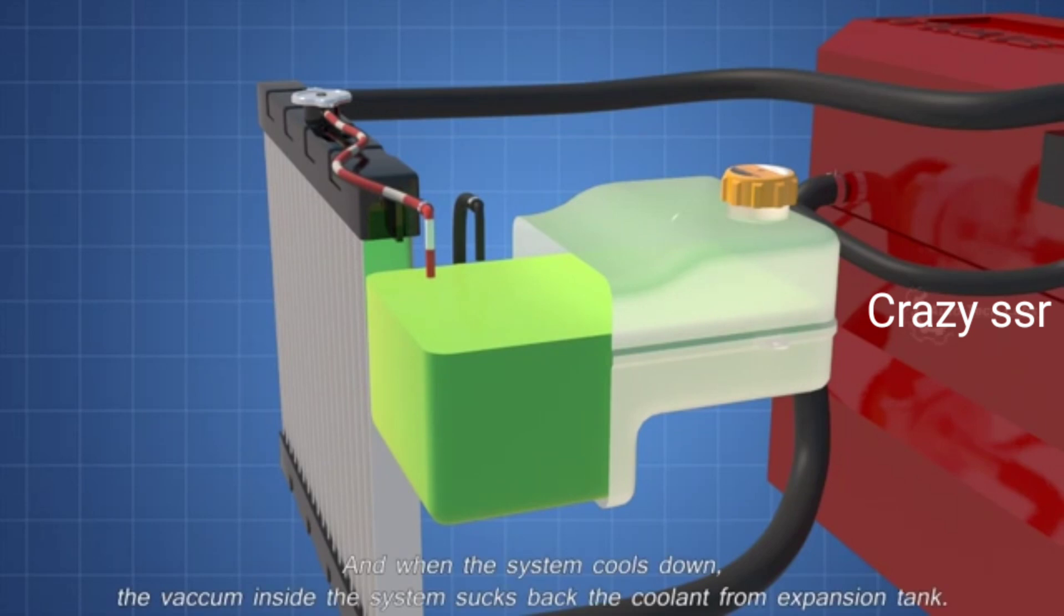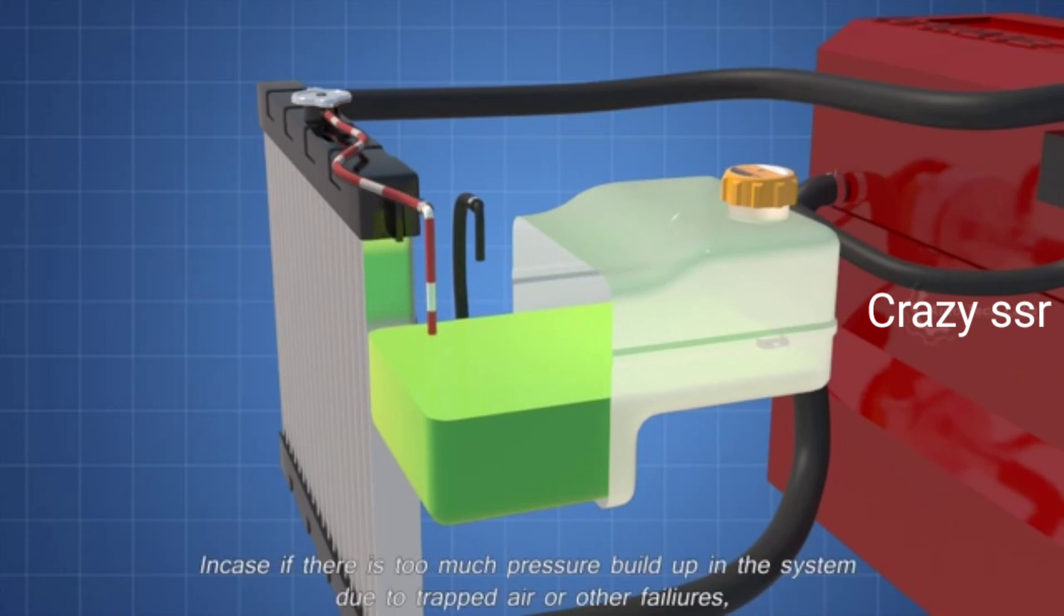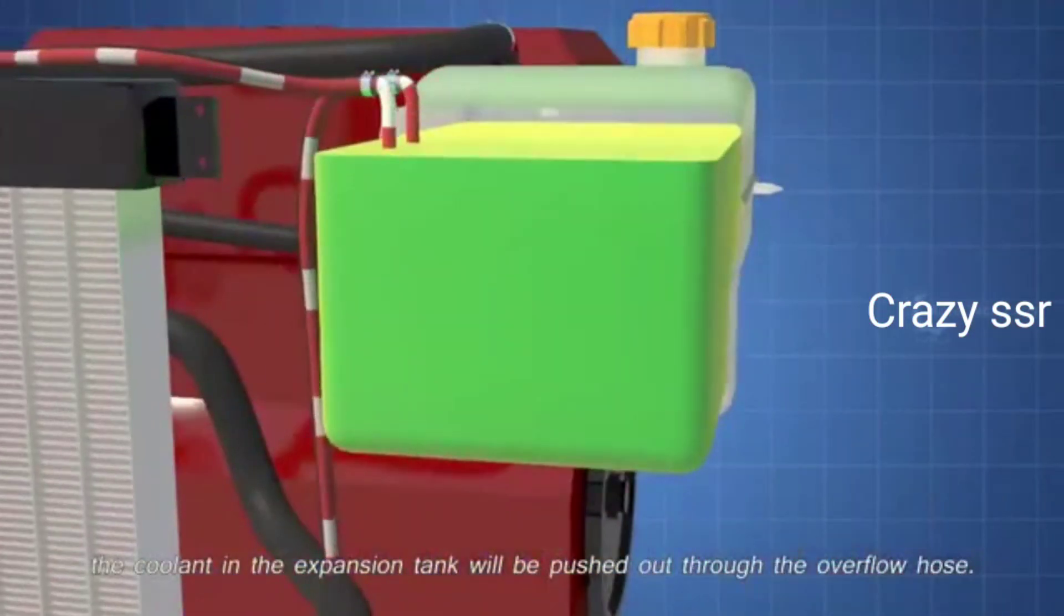And when the system cools down, the vacuum inside the system sucks back the coolant from expansion tank. In case if there is too much pressure build up in the system due to trapped air or other failures, the coolant in the expansion tank will be pushed out through the overflow hose.